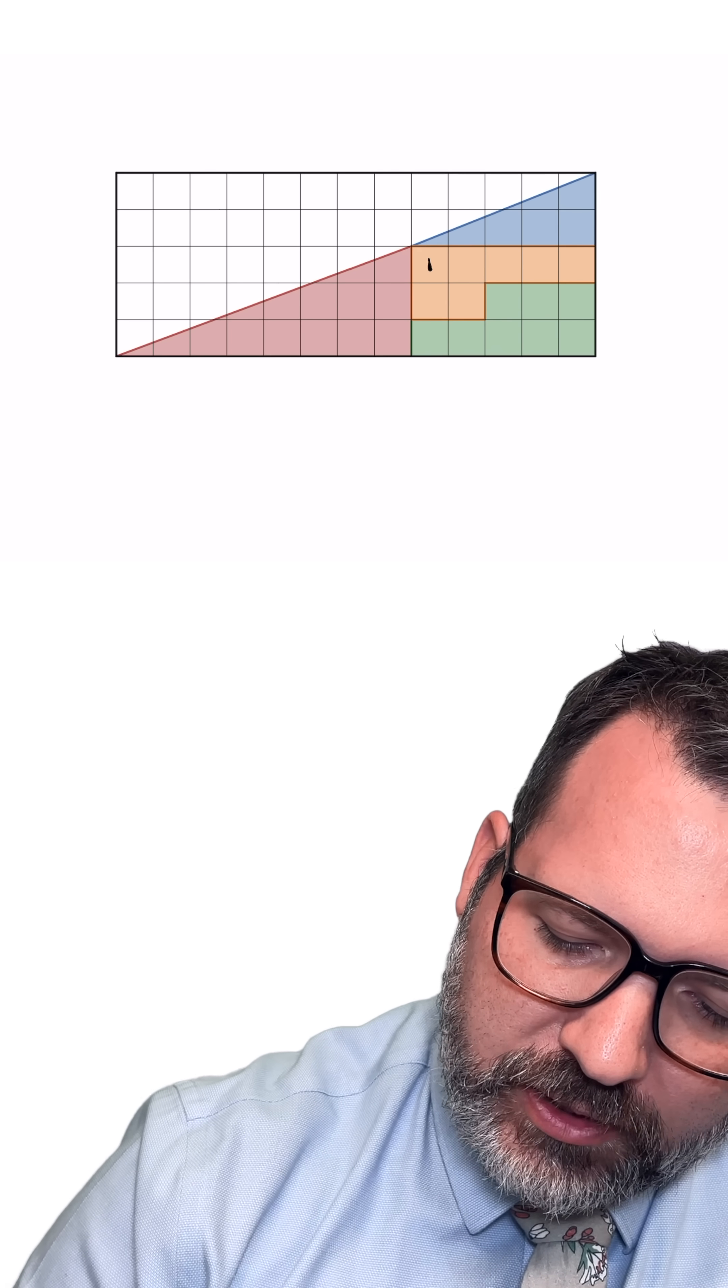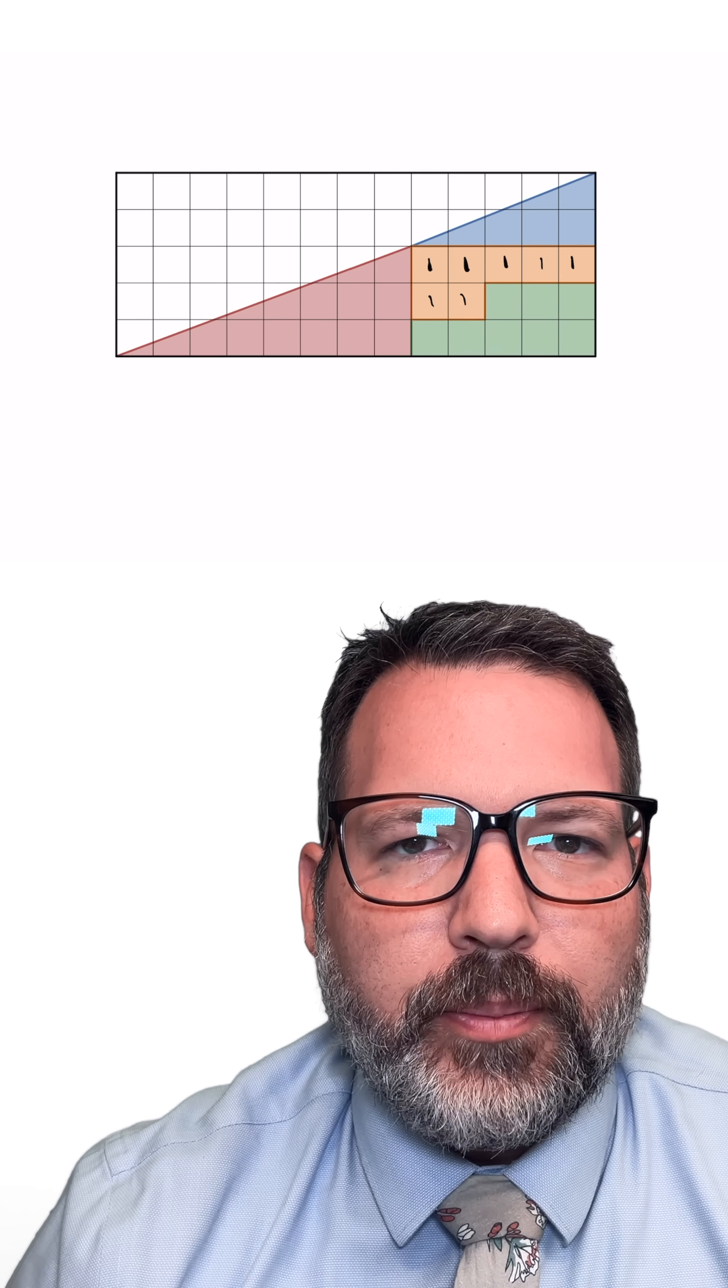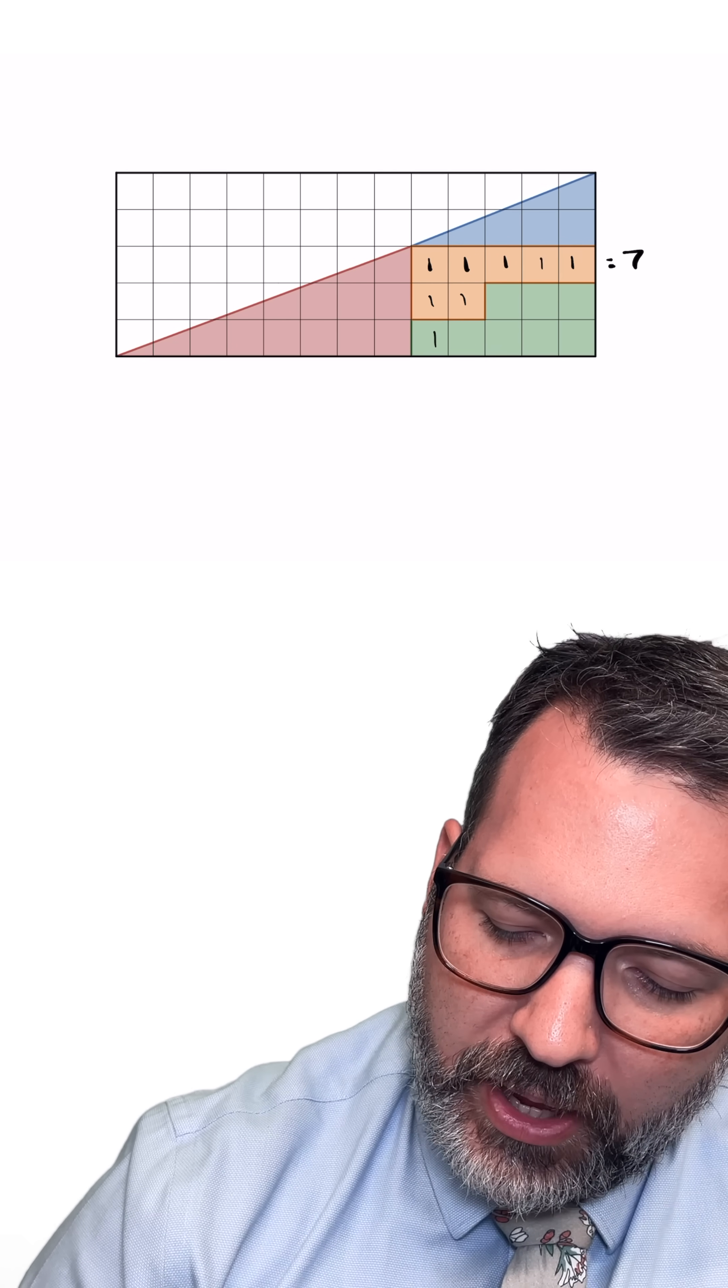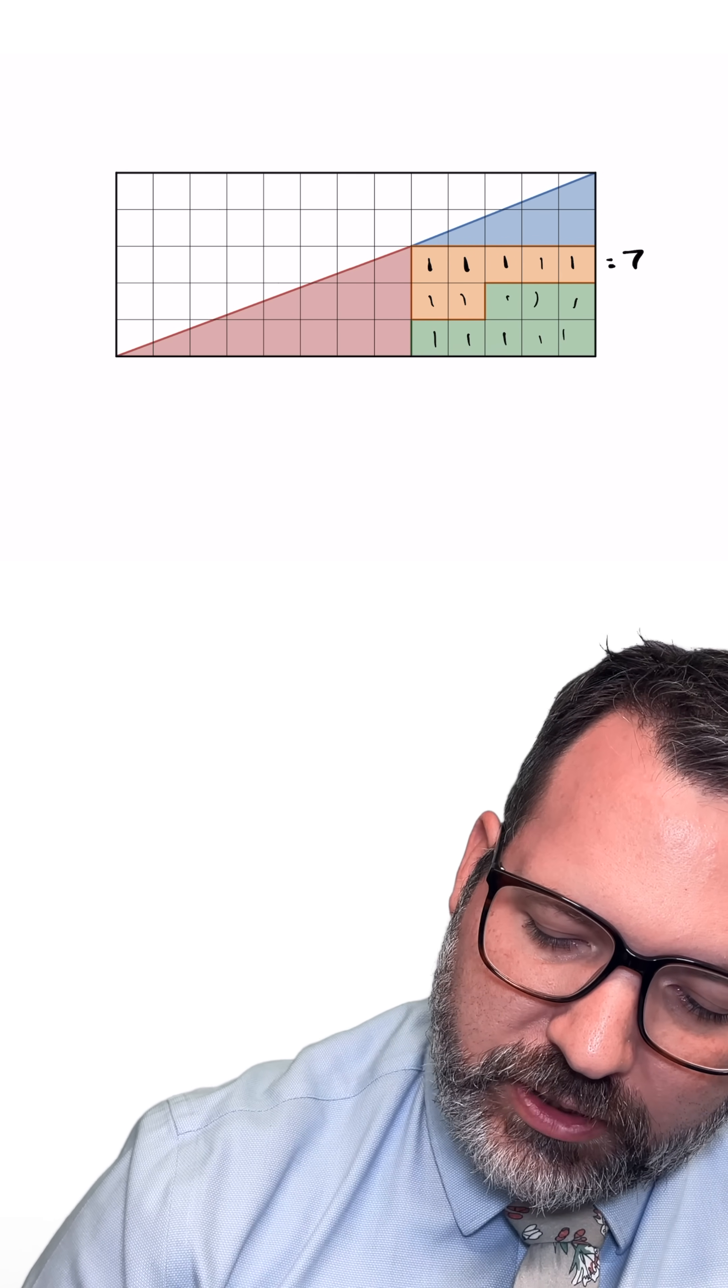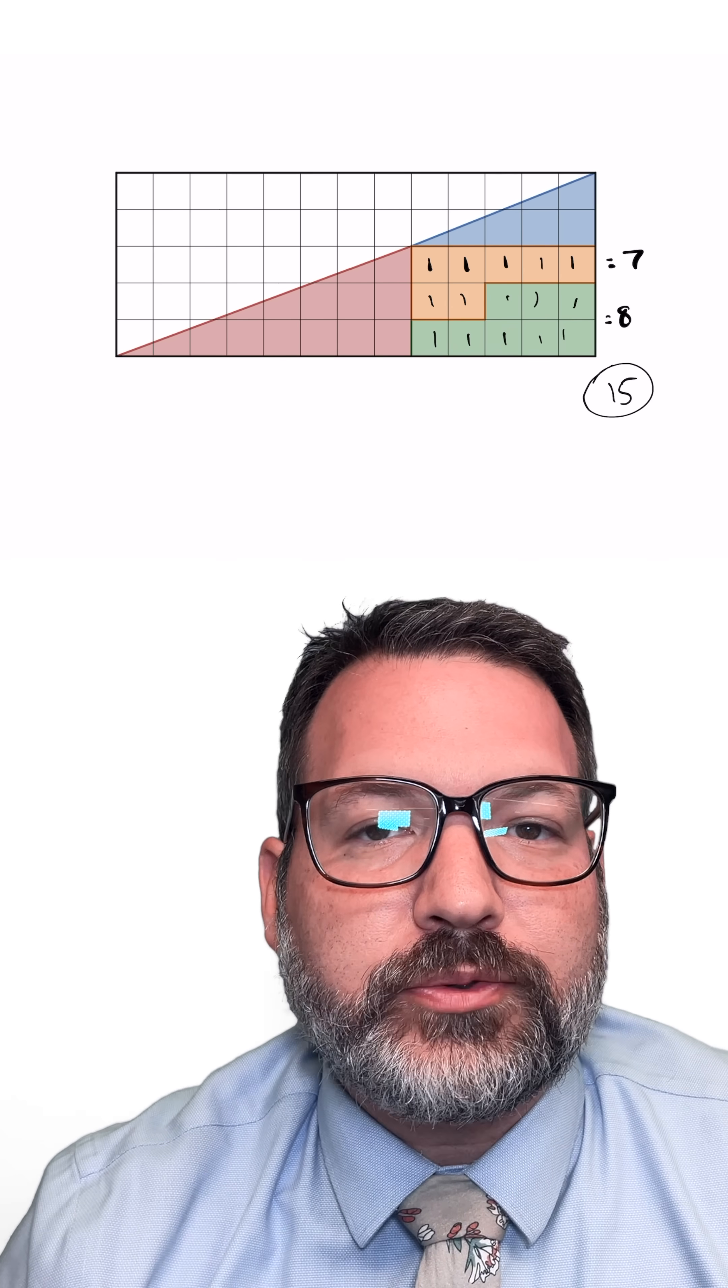The Tetris-like pieces are probably the easiest ones to figure out because they're literally just made up of some number of blocks. Looks like seven blocks for this orangish kind of shape, and then another eight blocks for this greenish kind of shape. And so that's a total of 15 blocks from the Tetris-like pieces.